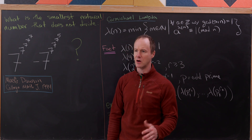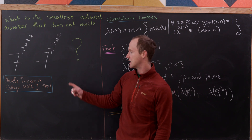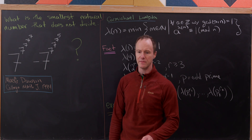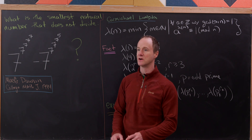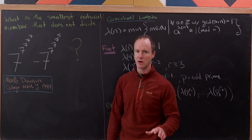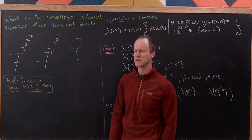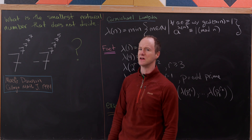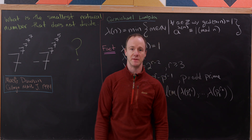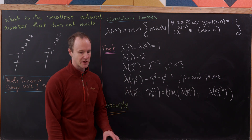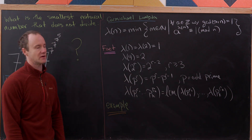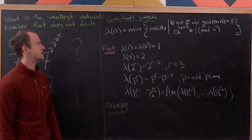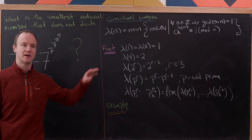I found this problem, without solution, in an issue of the College Math Journal. In that article they build some pretty nice techniques for dealing with power towers, but we're going to use more brute force techniques so we don't have to prove those technical results. We'll use something called the Carmichael lambda function, which is almost like an upgraded version of Euler's totient function.